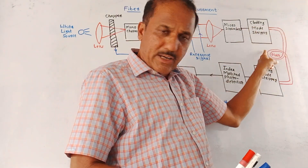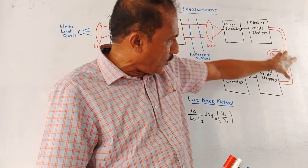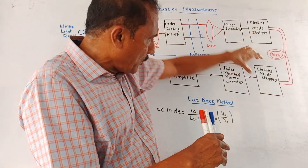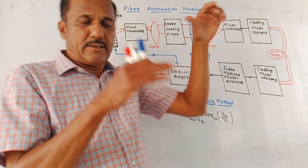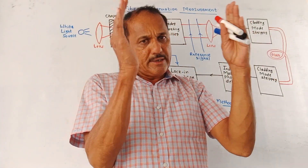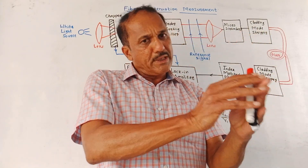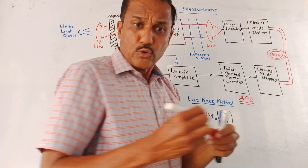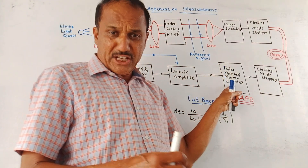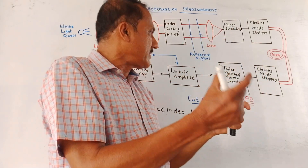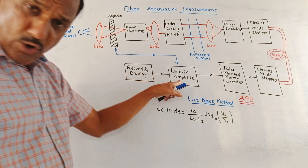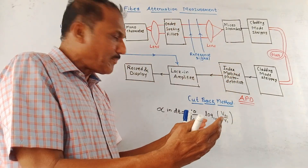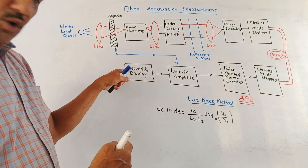This signal is then applied to the fiber optic cable under test. At the output end of the fiber optic cable, we are again using a cladding mode stripper for the same purpose just discussed. Then this output is given to the index-matched photo detector. The photo detector converts the optical signal into an electrical signal — specifically an APD, that is an avalanche photo diode, is used. It is index-matched, meaning some type of gel is used to properly match the index. Then its output is given to the lock-in amplifier, which avoids fluctuations in the readings, and the readings are recorded and displayed.